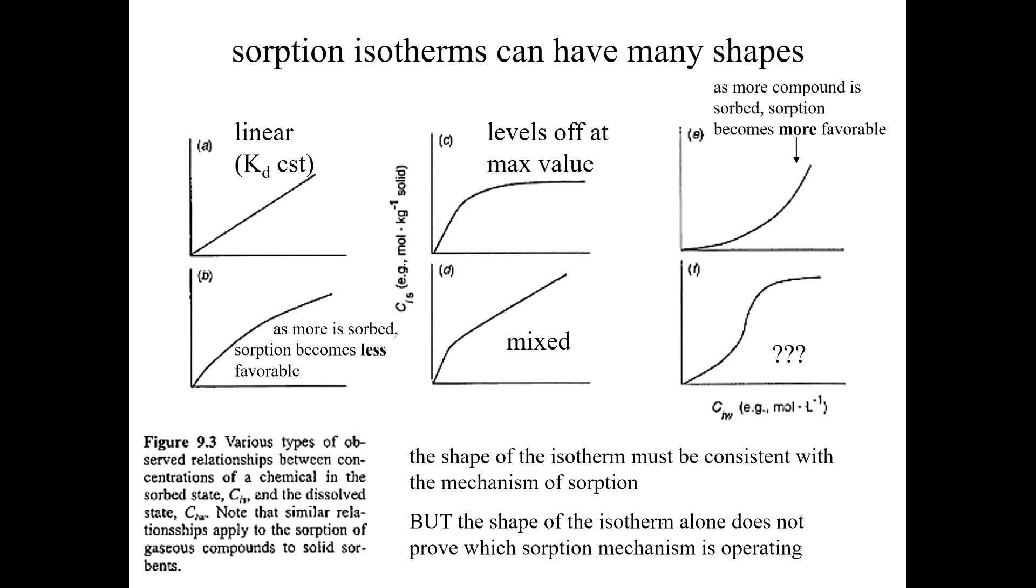And the thing is, adsorption isotherms can have a lot of different shapes. Sometimes they're linear. So I had to sort of split this plot up, but on all of these plots, the y-axis is CS, which is the concentration sorbed, and the x-axis is CW, even though it's not explicitly written here.